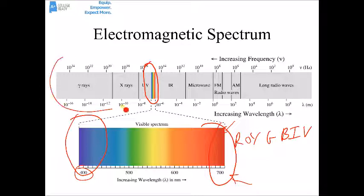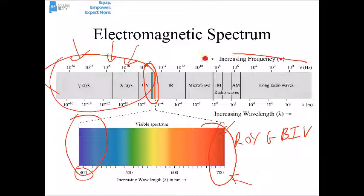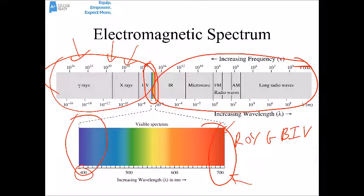UV, X-rays, and gamma rays have very high frequencies, very short wavelengths, and lots of energy per photon — that's why all three are dangerous and can cause burns and cancer. The types of light on the other end have very long wavelengths, very low frequencies, and therefore not much energy per photon, so we're not worried about them causing damage.